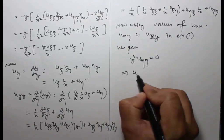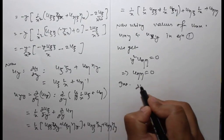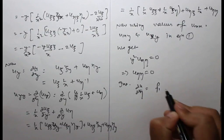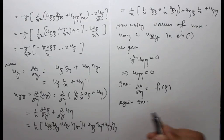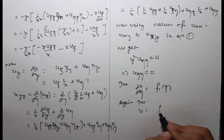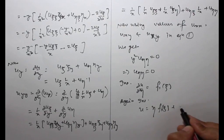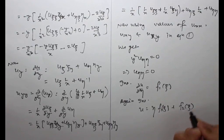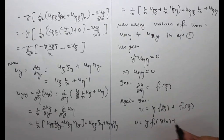Using the values of uxx, uxy, and uyy in equation 1, we get uηη equals 0. Integrating, del u/del η equals some function f(ξ), and integrating again, u equals η·f₁(ξ) plus f₂(ξ). Therefore u equals y·f₁(y/x) plus f₂(y/x). This is the required general solution.